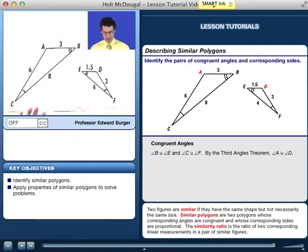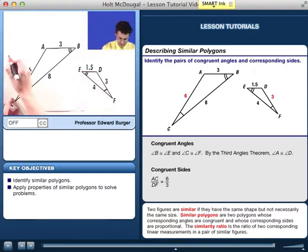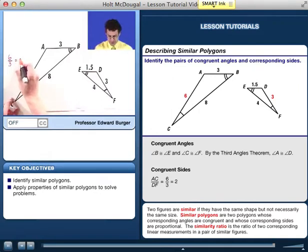Now that we know they're similar and we've identified the congruent angles, let's take a look at the ratio of corresponding sides. For example, the side opposite the double angle here is 6, and compare that with the side here, which is 3. So those are corresponding sides. And so 6 over 3 equals 2. That's that particular ratio.